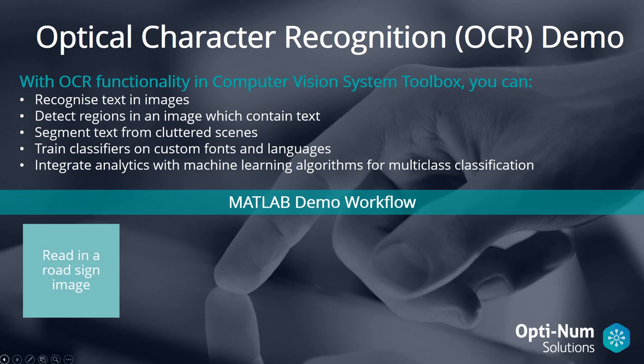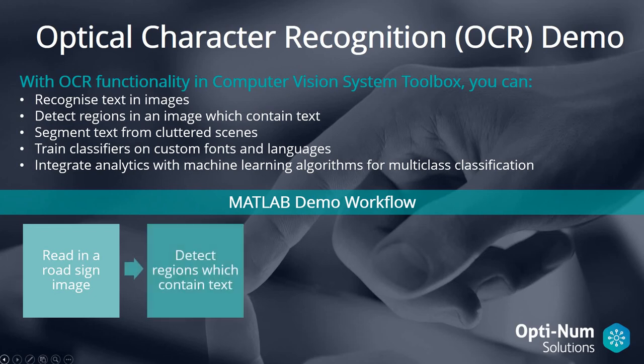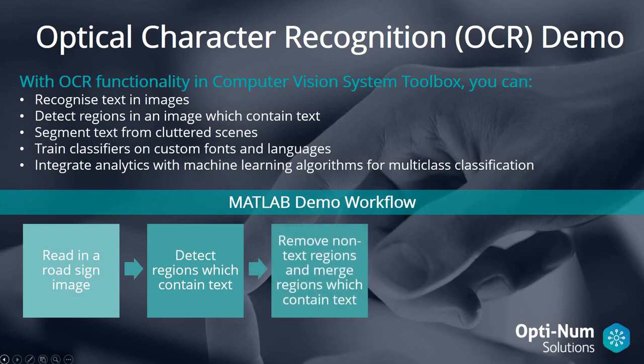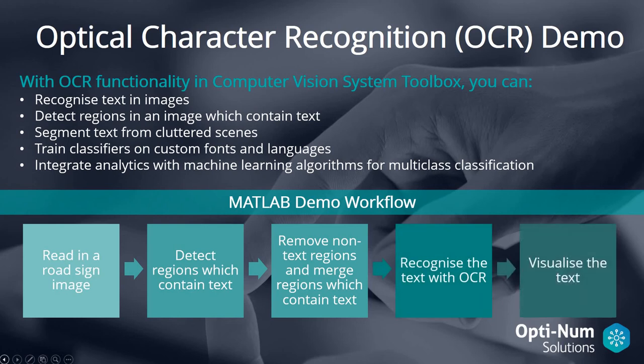In our demonstration, we're going to read in a road sign image — this is actually a handicapped parking sign. We want to detect regions in that image that contain text, since it's just a photograph. We want to remove the non-text regions and then merge the regions which do contain text so that we read all of the text together. We then want to recognize that text with OCR and visualize it to see if our prediction was correct.